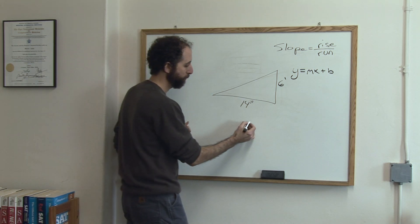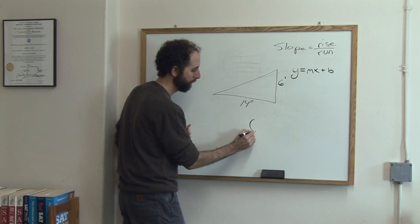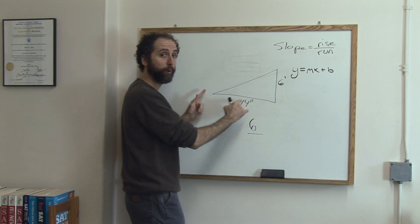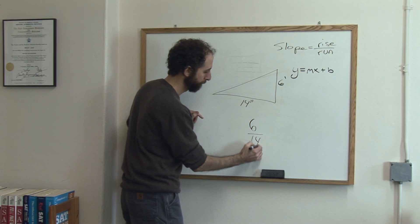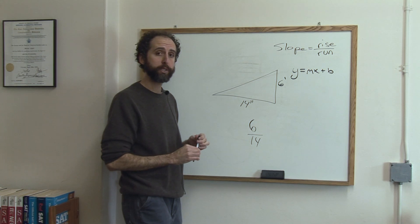So the slope of this ramp would be rise, how much does it go up? 6. And how much does it go over? 14. So the slope would be 6 over 14.